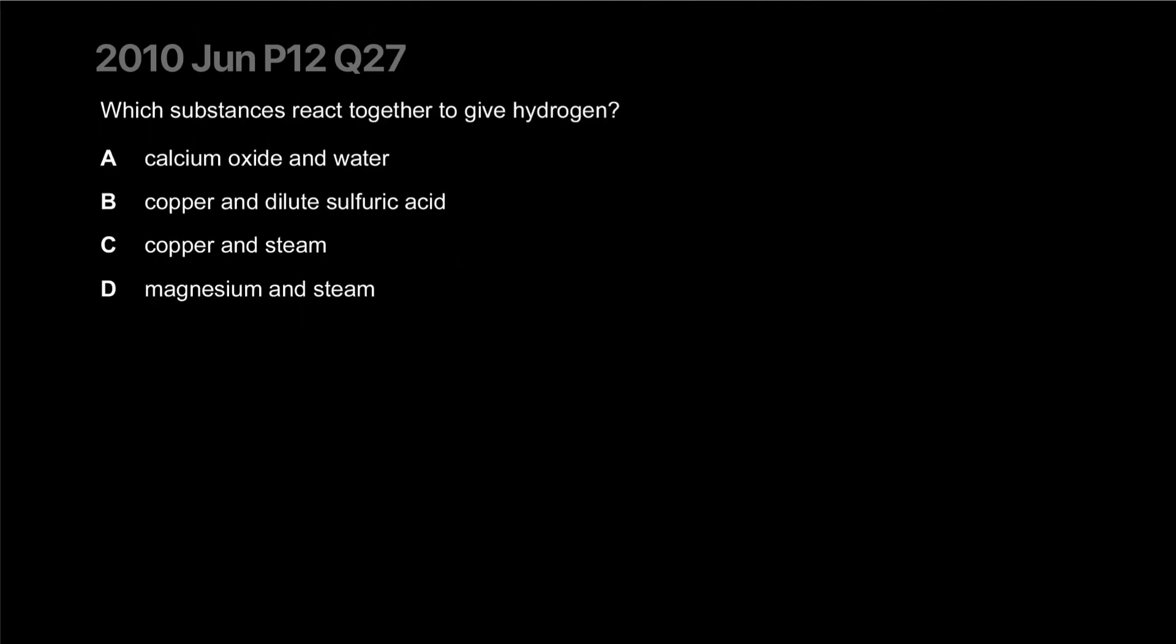Which substances can react together to give off hydrogen? Calcium oxide in water - that's the product, it's inert and not even soluble. Copper does not react with an acid. Magnesium actually does do it with steam - it's a very A-level thing. Magnesium reacts with steam to form hydrogen and magnesium oxide, whereas in cool water it forms magnesium hydroxide. Correct answer is D.